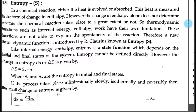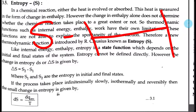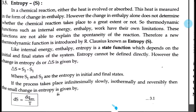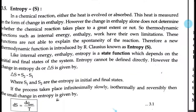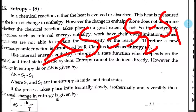Just as internal energy and enthalpy are state functions — meaning they depend upon the initial and final state — entropy is also a state function. Entropy is denoted by the symbol S, and as a state function it depends upon the initial state and the final state. The change in entropy, denoted by delta S, is given by S2 minus S1, where S1 is the entropy of the initial state and S2 is the entropy of the final state.